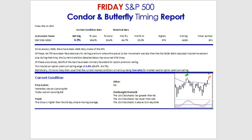Now, also during that time — remember that 64.7% is the benchmark — we've had 579 occurrences of our current market condition. Of those 579, 69.6% of the bars were similarly favorable for option premium selling. That's higher than the historical benchmark of 64.7%.